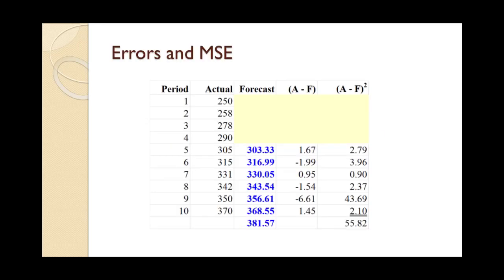The slide shows the calculation of the errors. 305 minus 303.33 equals 1.67. 315 minus 316.99 equals negative 1.99. 331 minus 330.05 equals 0.95. 342 minus 343.54 equals negative 1.54. 350 minus 356.61 equals negative 6.61. 370 minus 368.55 equals 1.45. These six values will be the points on the control chart. Also shown are the squared values used to compute the mean squared error.